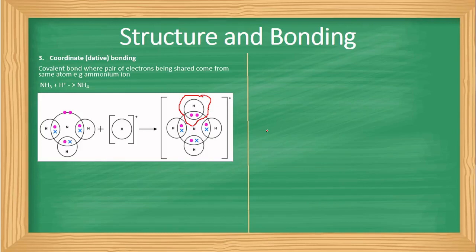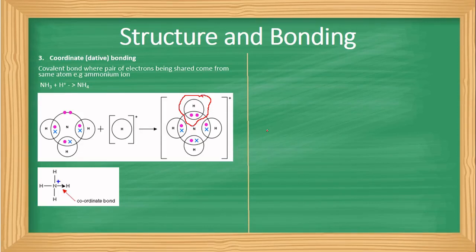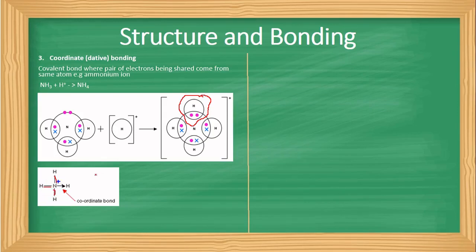In the coordinate/dative bond, it is nitrogen that donates the electrons to be shared. This is normally represented by an arrow pointing from the donor atom to the acceptor. The first three hydrogens in ammonium are joined to nitrogen through ordinary covalent bonding, but the fourth hydrogen — where all the shared electrons come from nitrogen — is represented by an arrow with a pointer at the end, distinguishing it as the dative bond.